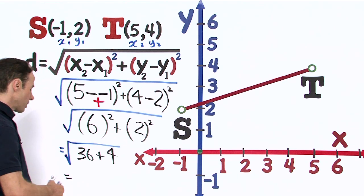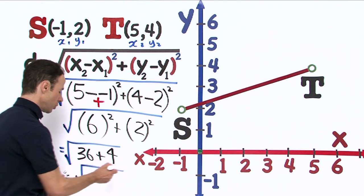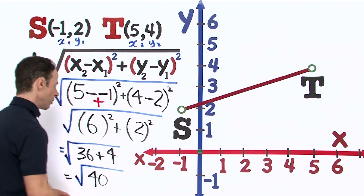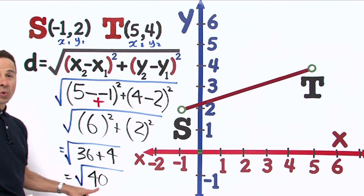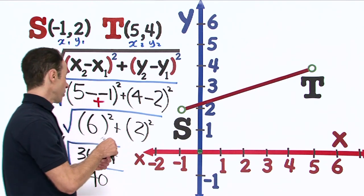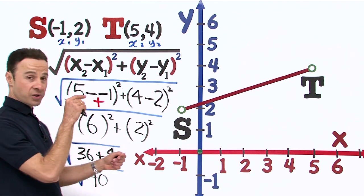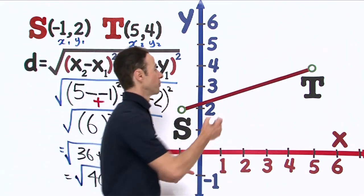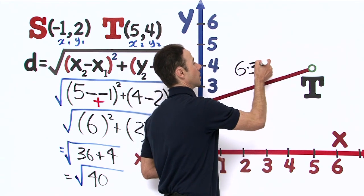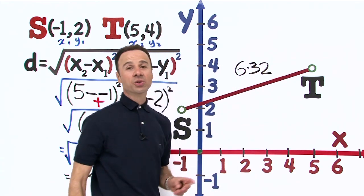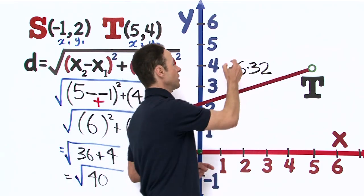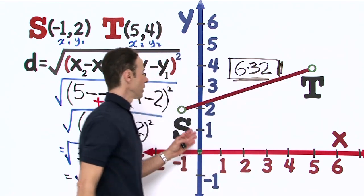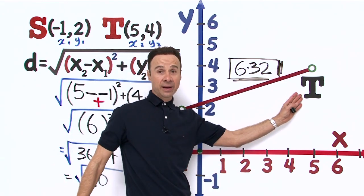All we need to do is go on the calculator and work out the square root of 40. On the calculator, the square root of 40 is—first square root, then 40—that is going to give us, to 2 decimal places, 6.32 units for the distance between S and T.